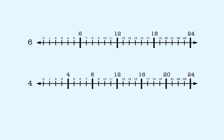12 is a multiple of both 6 and 4. The second place where multiples of 4 and 6 are the same is here, at 24. For our purposes, what we want is the smallest number that's a multiple of both 6 and 4. That number is 12. We call this the least common multiple of 6 and 4.